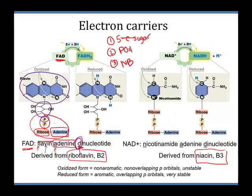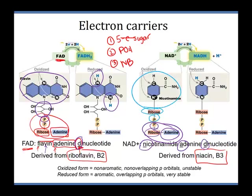When we add electrons to FAD, we add on two hydrogens, because hydrogens come with electrons, to get FADH2. Looking at NAD+, it also has a dinucleotide arrangement — adenine nicotinamide — with a five-carbon sugar, adenine, and phosphate group of one nucleotide, and a five-carbon sugar, phosphate group, and nitrogenous base of the second. You stick them together to get NAD+, and with NAD+ we just add on one hydrogen to get NADH.